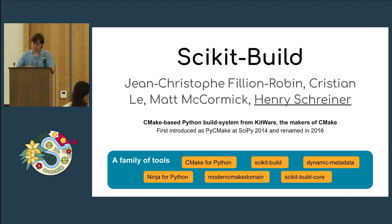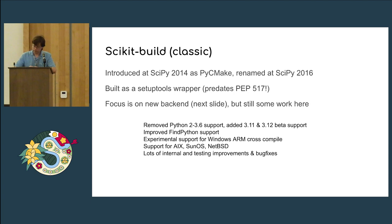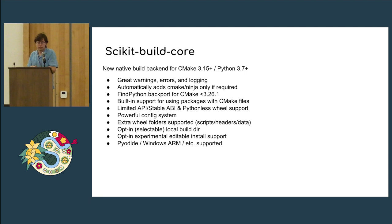I'm here to talk about Scikit-Build, a project that has had a long history with SciPy. It was announced as PyC Make at SciPy 2014 and renamed to Scikit-Build at SciPy 2016, and it's really grown into a family of tools. The classic Scikit-Build is a setuptools wrapper that lets you use a CMake build system by adding something to setup.py. We've been slowly modernizing it, adding support for newer versions of CMake's FindPython and various other platforms. But most of the focus has been on Scikit-Build Core, which is a brand new build backend designed for modern versions of CMake and Python.